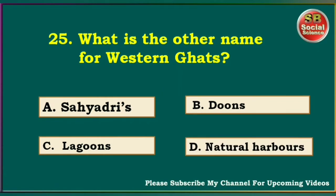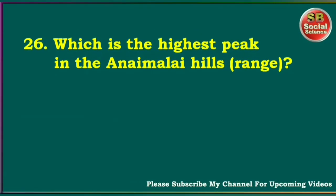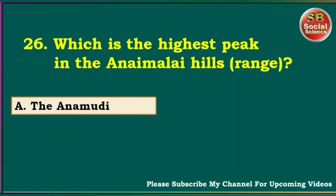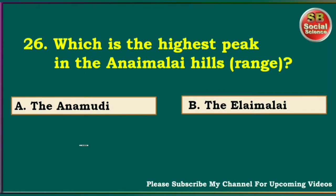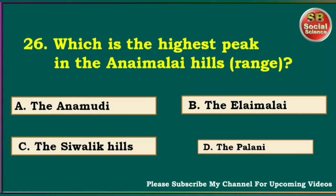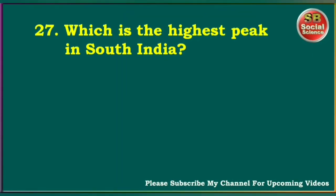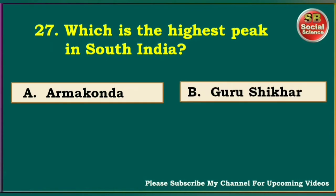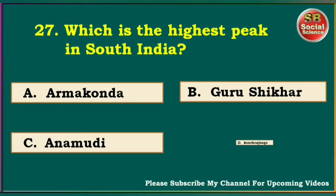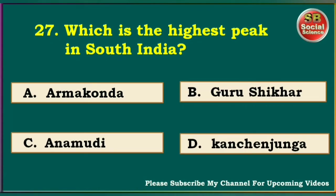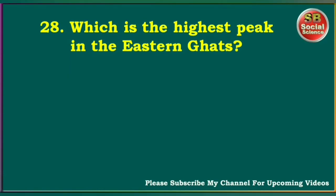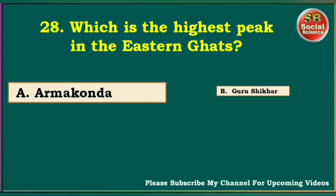Which is the highest peak in the Anamalai Hills? The Anaimudi, the Ilayamalai, the Shivalik Hills, the Palani. The answer is Anaimudi. Which is the highest peak in South India? Armakonda, Guru Shikhar, Anaimudi, Kanchanjunga. The right answer is Anaimudi. Which is the highest peak in the Eastern Ghats? Armakonda, Guru Shikhar, Anaimudi, Kanchanjunga. The answer is Armakonda.